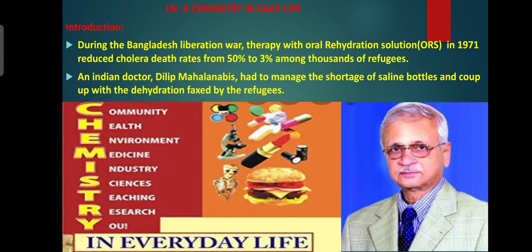Welcome back to class. Today we are going to discuss a new lesson: Chemistry in Daily Life. Science is everything within and around us — it can be seen in everything we do and everything that happens to us. We can observe all branches of science in different aspects of our everyday life. In this chapter, we will learn about observing chemistry in everyday life.